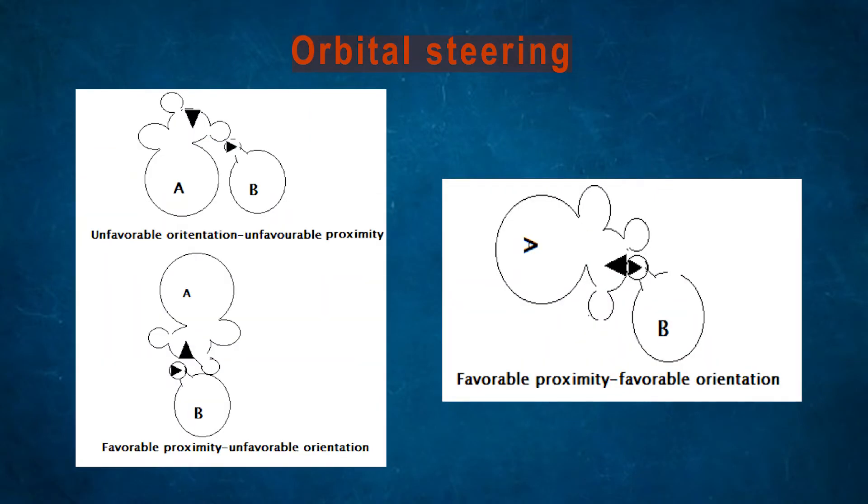It holds tightly, reducing flexibility. Orbital steering: Proper alignment of reactive orbitals happens here. The substrate and catalytic group on the enzyme must not only be brought into proximity but also into proper alignment. Orientation of the substrate is needed, relevant orbitals overlap.